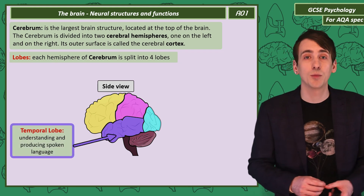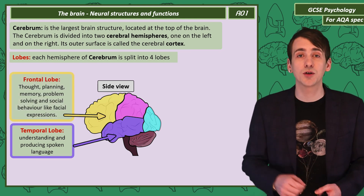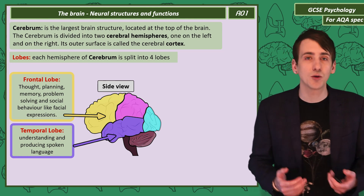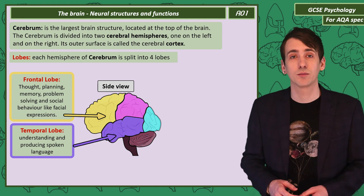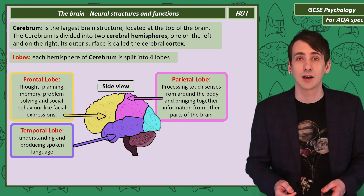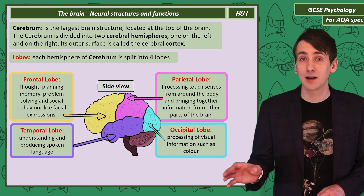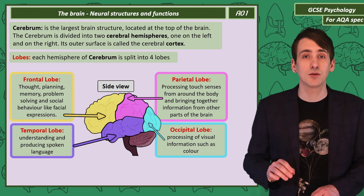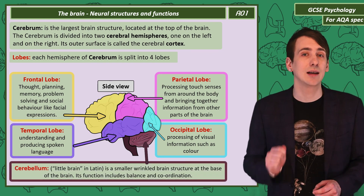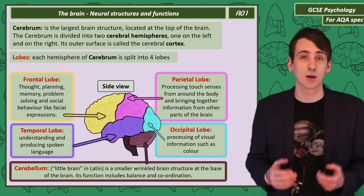The left temporal lobe understands and produces spoken language. The frontal lobe is involved in conscious thought, planning, memory, and logical tasks like problem solving. It also regulates social behaviour like facial expressions. The parietal lobe processes touch sensations from around the body and brings together information from other parts of the brain. At the back of the brain is the occipital lobe, which processes visual information coming from the eyes. The cerebellum, a separate structure found at the base of the brain, is responsible for functions like balance and coordination.